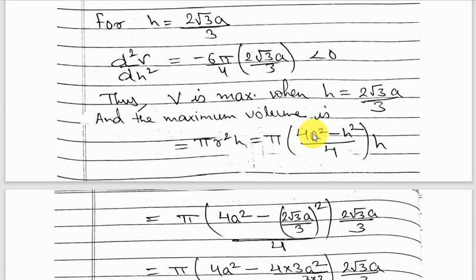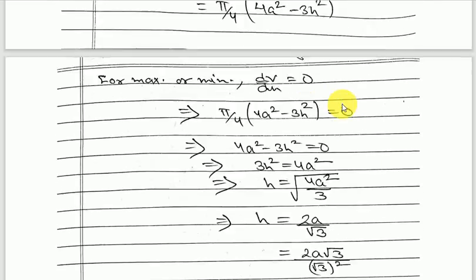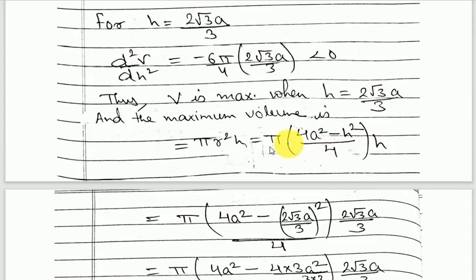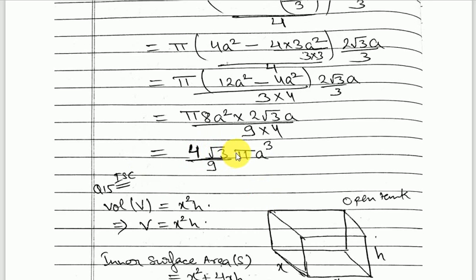The question also asks for the maximum volume. Volume equals πr²h, and we already found r² in terms of h. Replacing r² with (4a² − h²)/4 and substituting h = 2√3·a/3, simplifying gives the maximum volume as 4√3π·a³/9. This completes the solution for question 14.